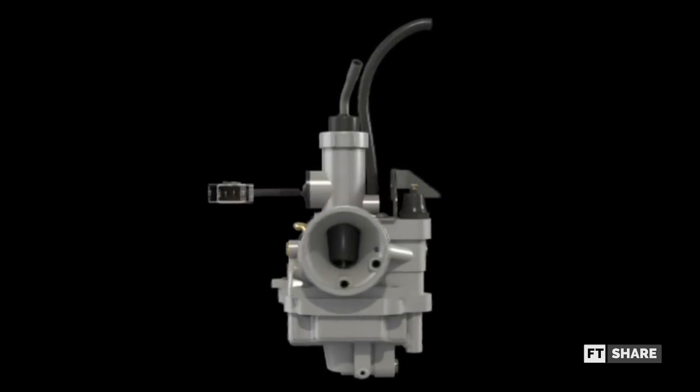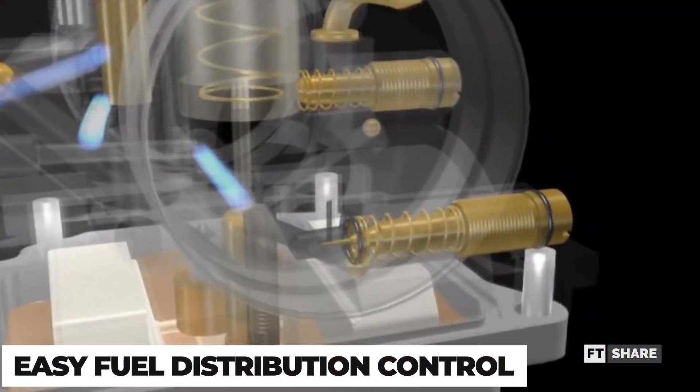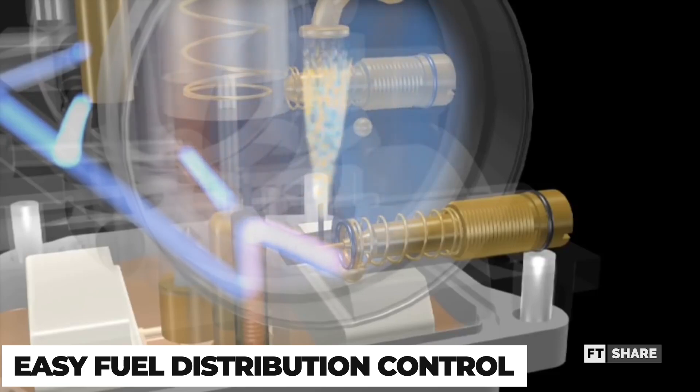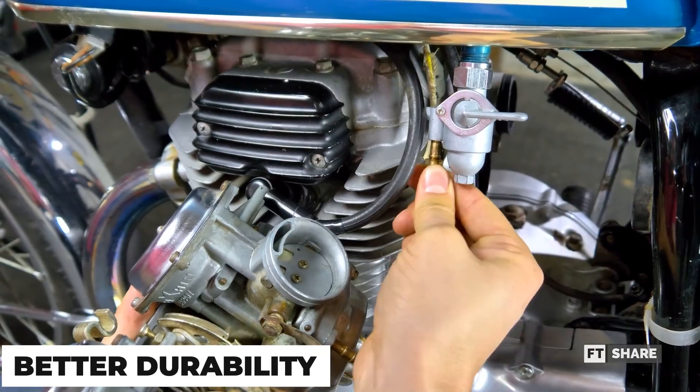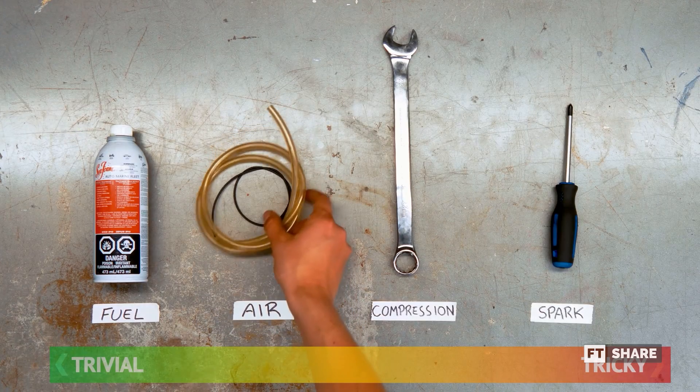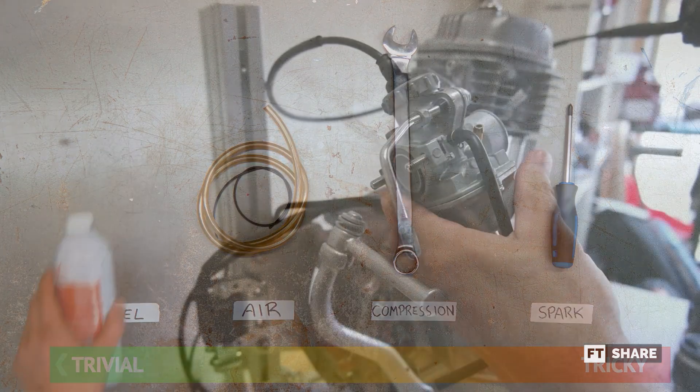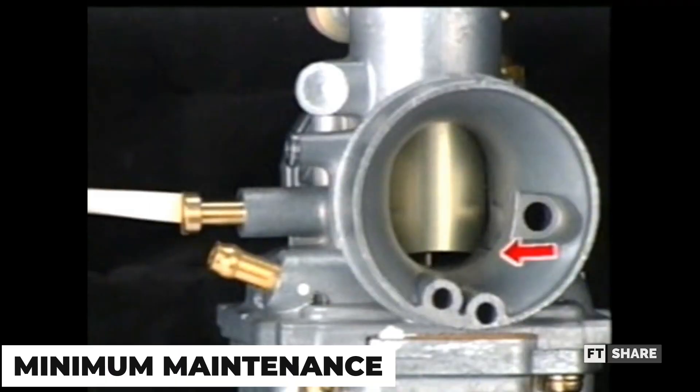Now we move on to the opposite camp, namely the carburetor. First, it's easy to adjust the fuel delivery with just a screwdriver to chase either power or fuel efficiency. Second, durability tends to be better compared to injection. However, we have to adjust and maintain it frequently. And third is the ease of finding a shop that can fix the carburetor if there is a problem with this tool while we are on the road.